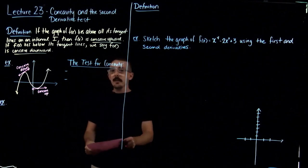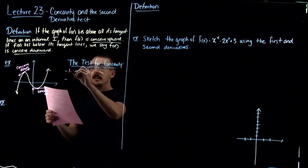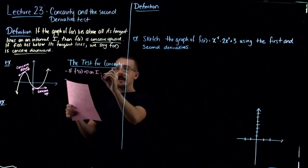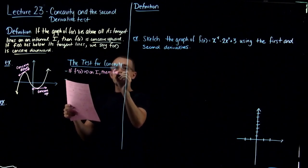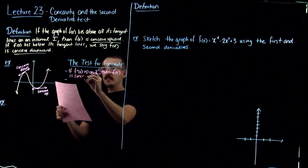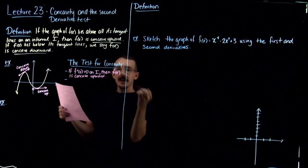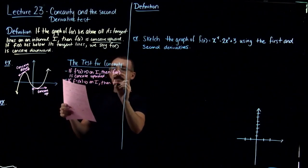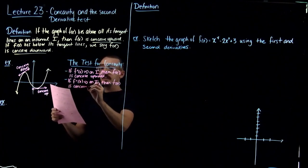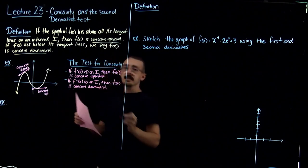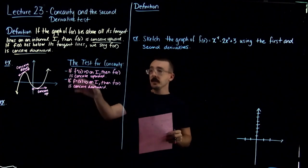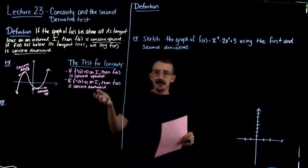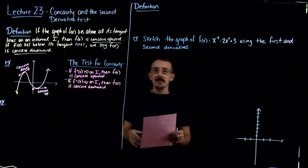How do we test for concavity? Here is the test: if f double prime of x is positive on some interval i, then f(x) is concave upward. If f double prime is less than zero on some interval i, then f(x) is concave downward. So we compute the second derivative for a given function and find all the x-values that make it positive or negative. The first derivative tells you increasing and decreasing; the second derivative tells you something about the shape of the graph.